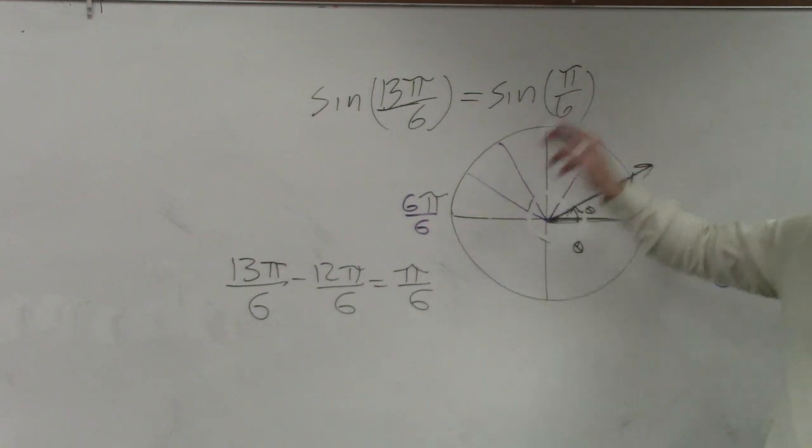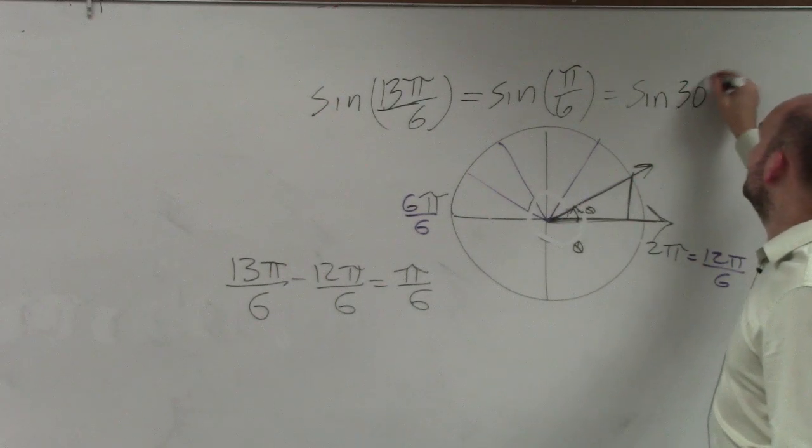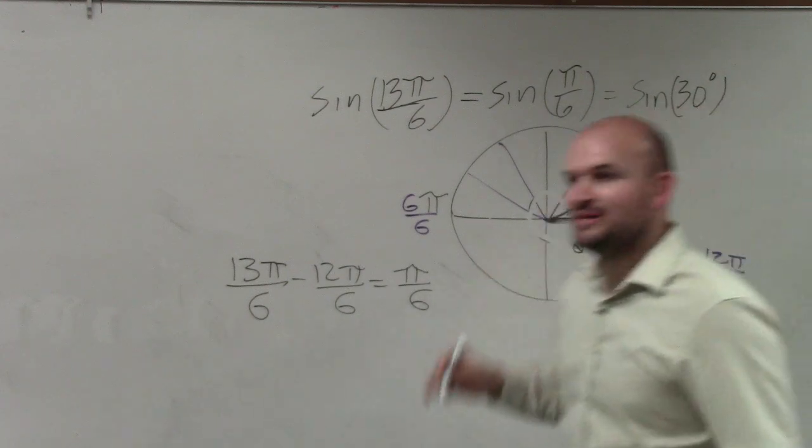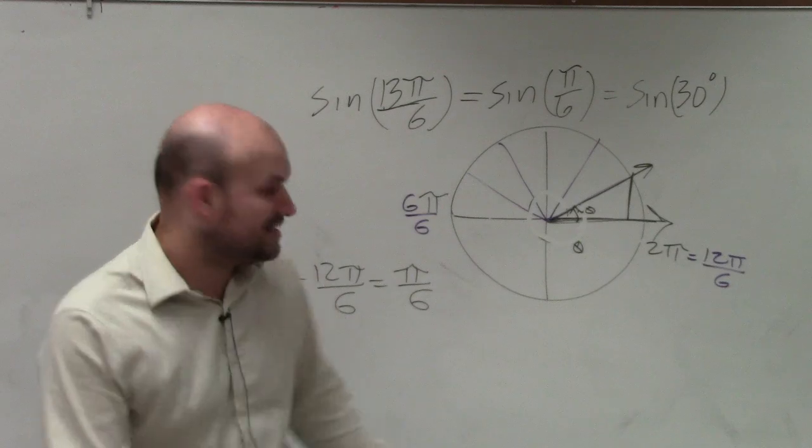Now pi over 6, I go back to my little chart. That's the same thing as sine of 30 degrees. And by the time you do this so many times, you guys automatically should have sine of 30 degrees memorized.